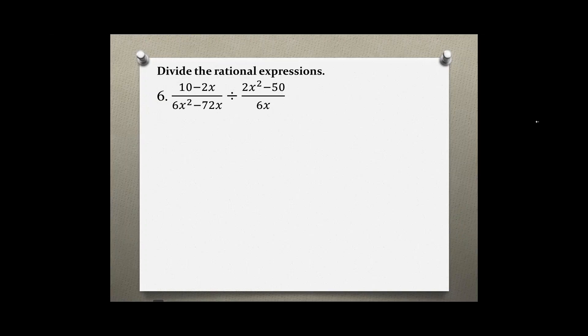First step would be to factor each individual part of the rational expressions and then applying the rule for keep the first fraction, change the sign to multiplication, and flip the second fraction. So let's start factoring right up here.